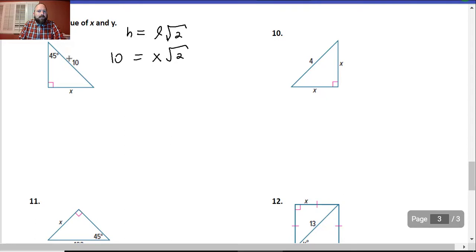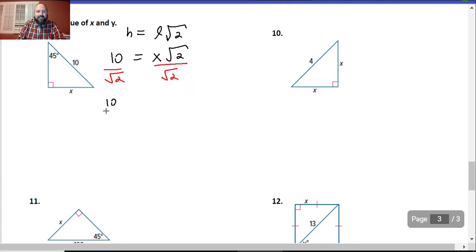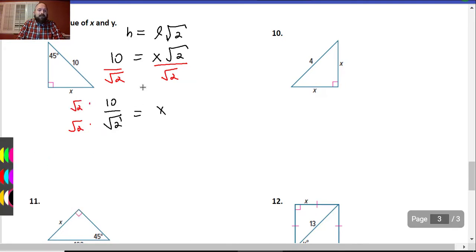Okay, well, I just have to get him to the other side. So I'm going to, this is multiplying, so I'm going to divide by radical 2 on both sides. When I do that, I get 10 over radical 2. And at this moment, we understand that we can't have radicals in the denominator. So we're going to have to multiply by radical 2 on the top and the bottom. 10 times radical 2 is 10 radical 2, and radical 2 times radical 2 is 2.